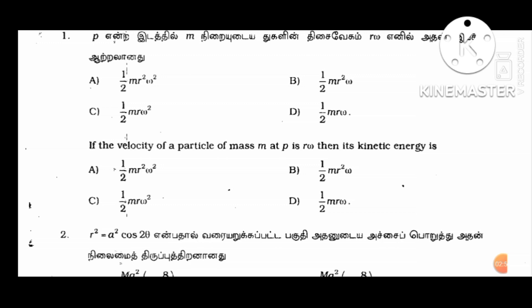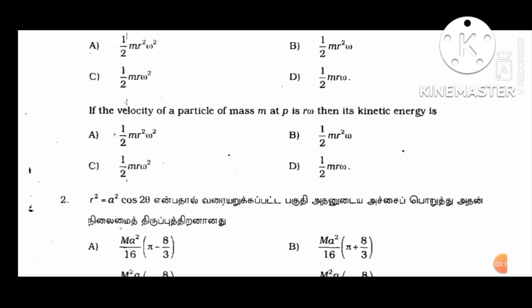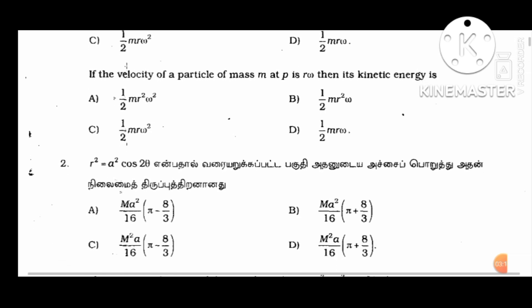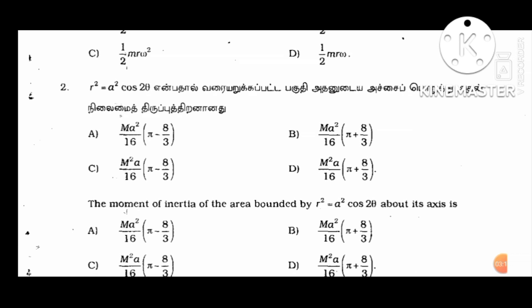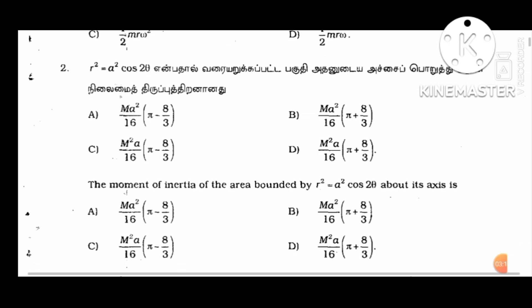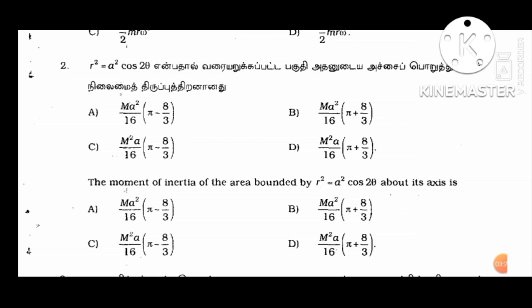If the velocity of a particle of mass m at point p is r omega, then find its kinetic energy. That's the first question — this is already a well-known question. Second question: the moment of inertia of the area bounded by r squared equal to a squared cos 2 theta about the axis.